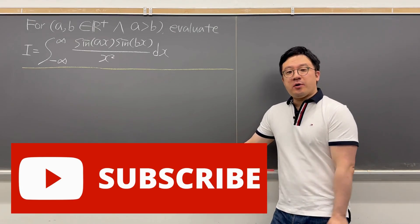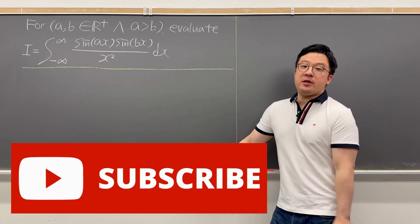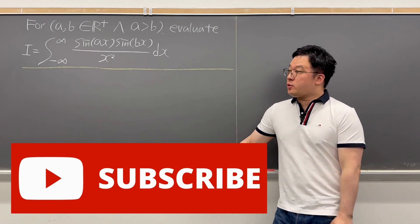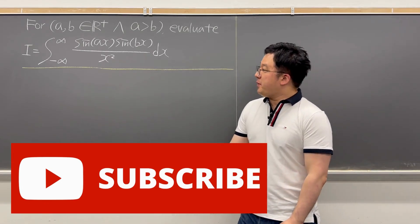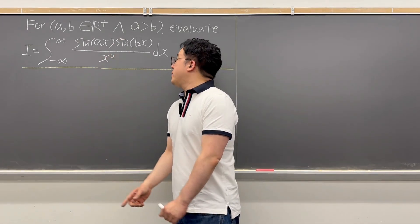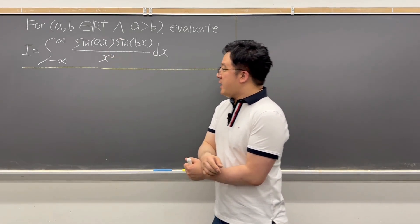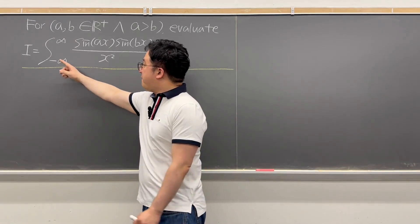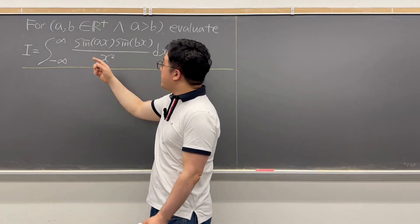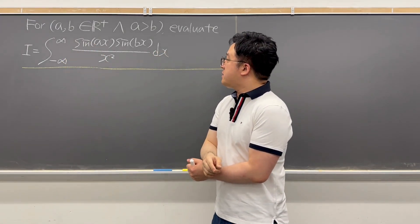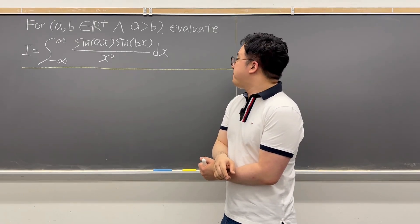Okay guys, welcome back. This is a very interesting integral question from my friend U.S. Descartes on Twitter. The question is: for A and B being positive real numbers and A greater than B, evaluate the integral from negative infinity to infinity of sine(Ax) times sine(Bx) over x squared, dx.